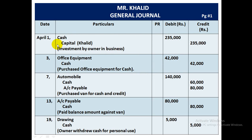Credit wala account thoda door space chhod ke likha jata hai — ise indentation kehte hain. Capital ke aage owner ka naam mention karein. Har journal entry ke baad ek chhoti line me narration di jati hai jisme transaction ka description hota hai. Is transaction me owner ne investment ki business me, isliye narration likhenge: 'Investment by owner in business.' Yeh ek journal entry complete hui — April 1 ki entry record ho gayi.